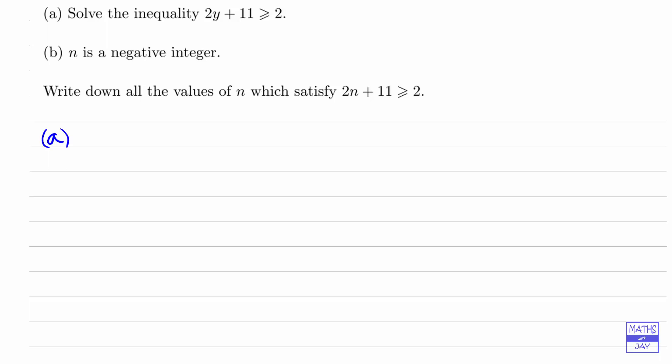We'll start by subtracting 11 from both sides. So if 2y plus 11 is greater than or equal to 2, then 2y must be greater than or equal to 2 minus 11, which is negative 9. We've simply subtracted 11 from both sides. Then we want to get y on its own, so now we just need to divide both sides by 2.